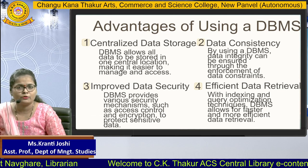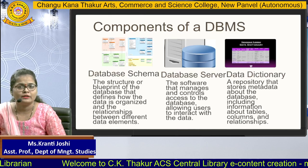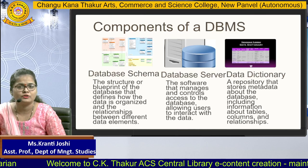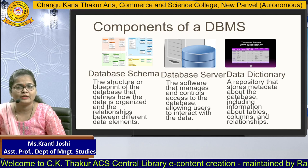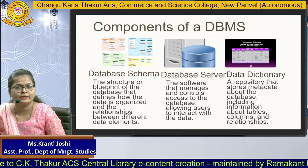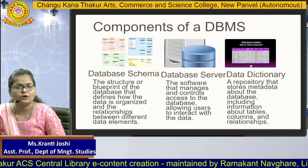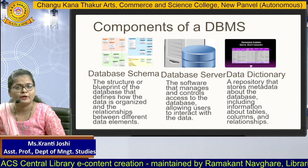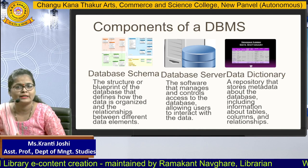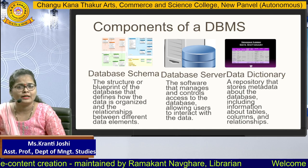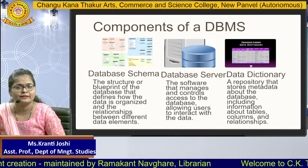Next we are going to see the components of DBMS. There are three components: first, database schema; second, database server; third, data dictionary. The database schema is the structure or blueprint of the database that defines how data is organized and the relationships between different data elements.